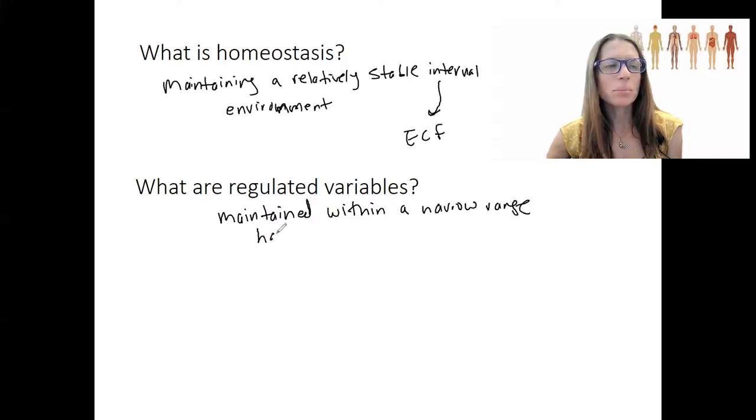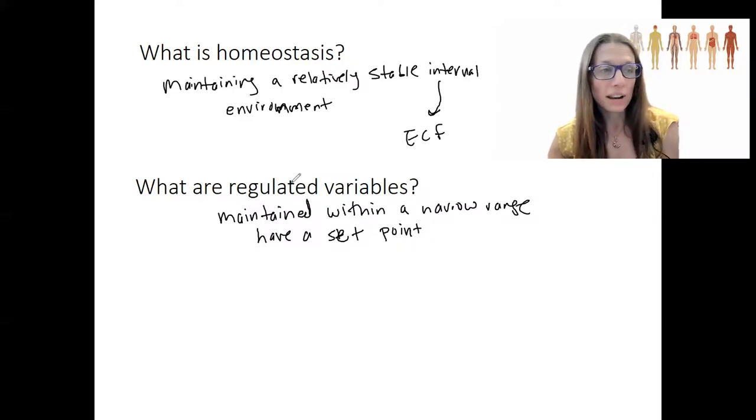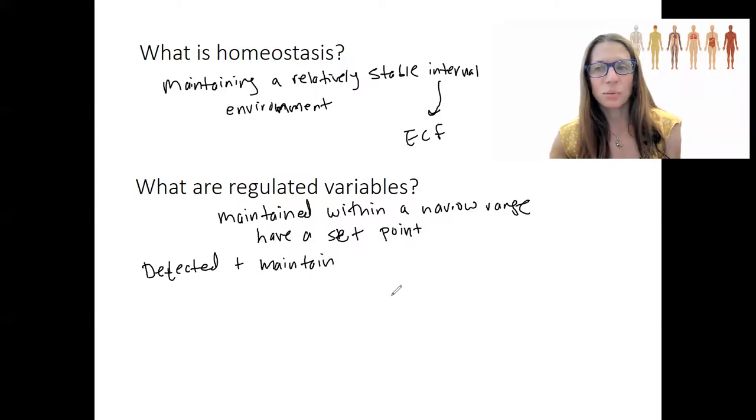They have a set point, an ideal level, and they are maintained right around that set point. So, in a relatively stable state, in order for something to be a regulated variable, it needs to be able to be detected, right? Like, obviously, you have to be able to detect something so that you can then maintain within this range.